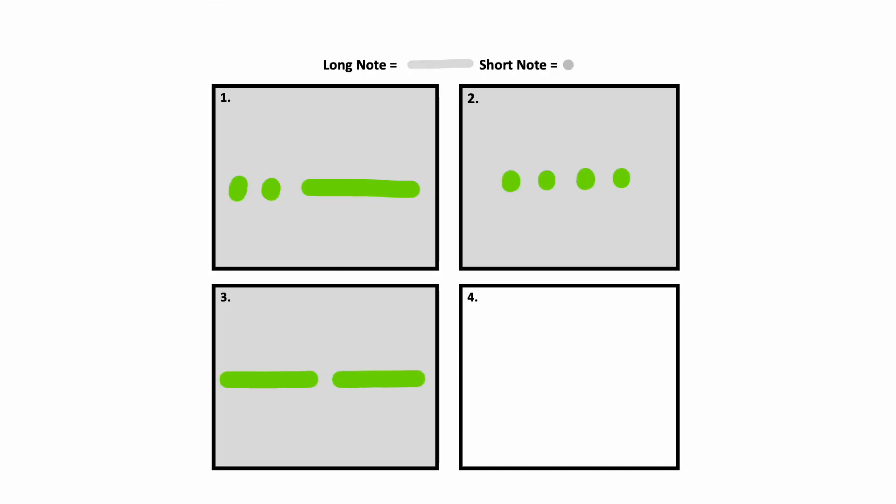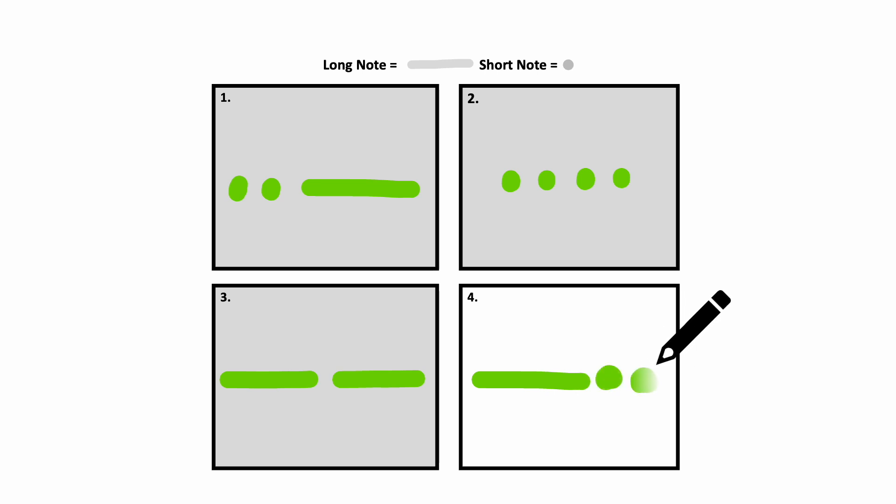Here is the last box, number four. Here is number four again. The answer for number four is a line with two dots — that one was long, short, short.